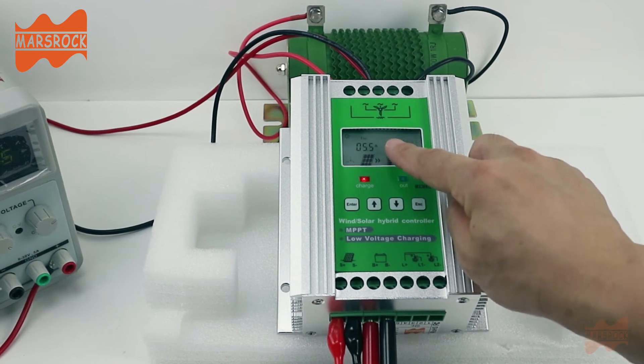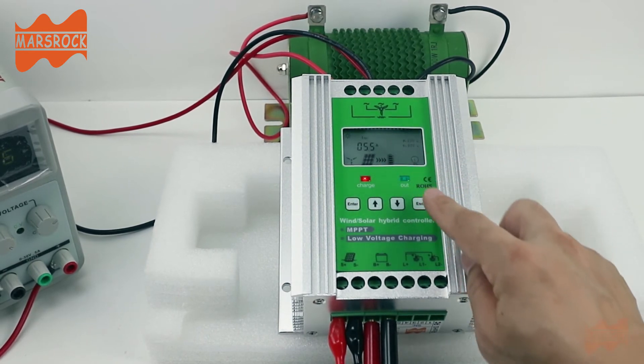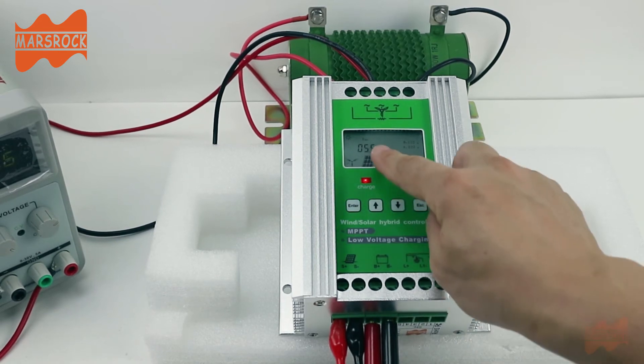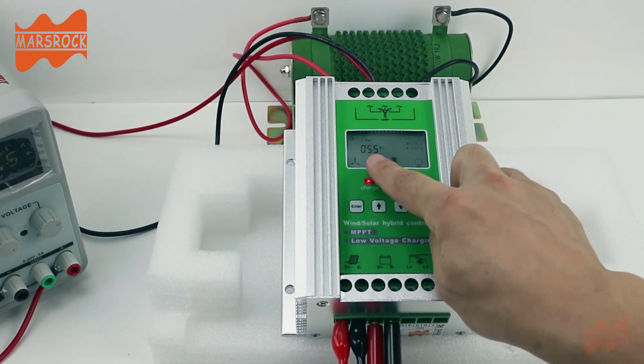Here you can change the charge current. Now it's showing the current from wind turbine.